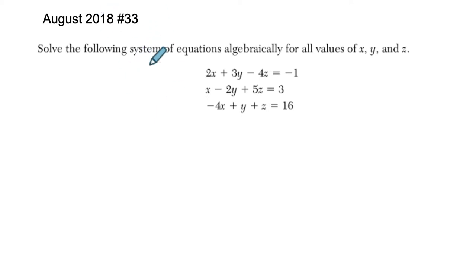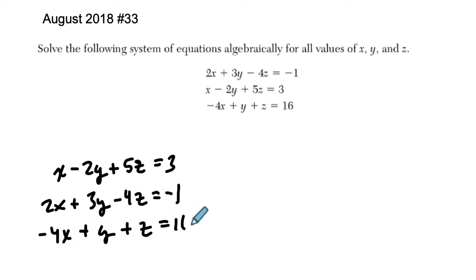Okay, so I want to specify that I'm actually going to think of this problem in this order, and I'll explain why. I'm going to put this to the top, so x minus 2y plus 5z equals 3, and then the other two, that doesn't really matter to me, 2x plus 3y minus 4z equals negative 1, and then finally, negative 4x plus y plus z equals 16.